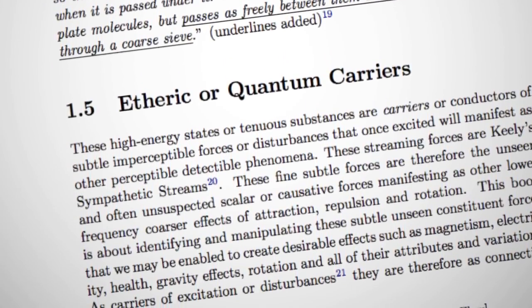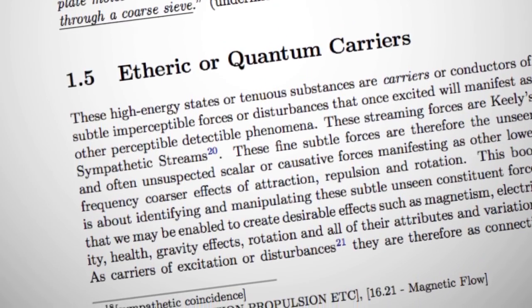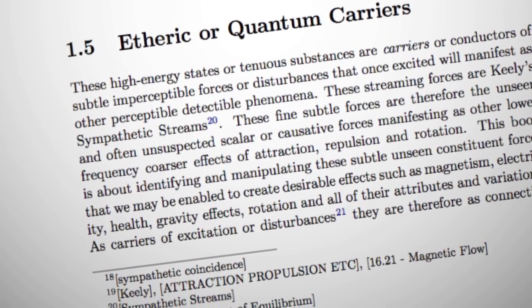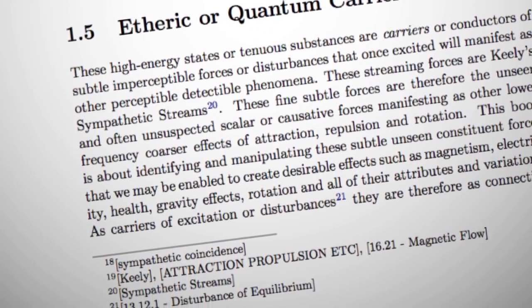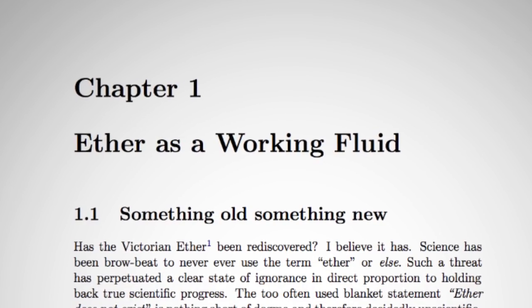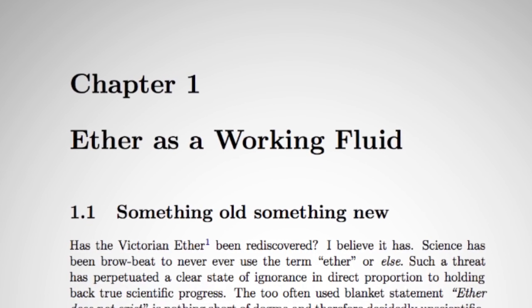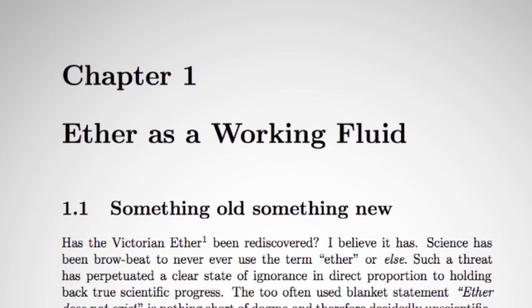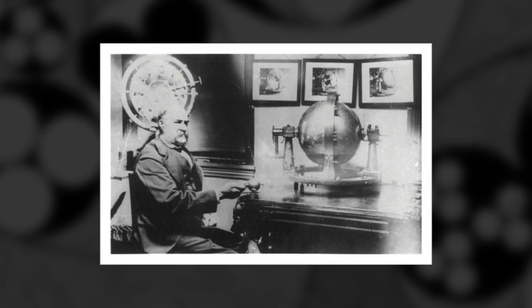Keeley made a variety of types of ether. Today we would call them plasmas — there are all different kinds of plasmas, they're not all the same. There are all different kinds of ethers; in fact, he said there's an infinite variety of them. So taking whatever specific ether he used, he could do certain things with it and used it as a working fluid in his machines.